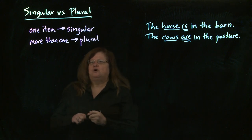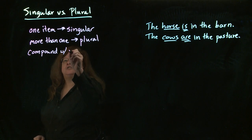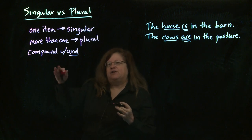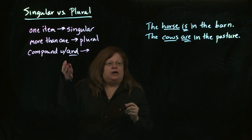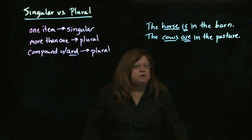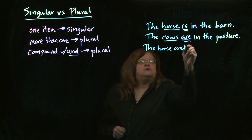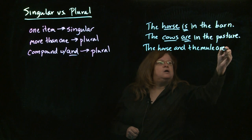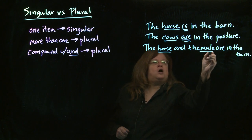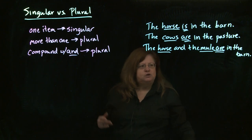Now we're going to get a little more complex when we look at compounds. If you have a compound that uses AND, AND means adding things together. So even if you're adding things together that are singular, when you're using AND, you automatically end up with something plural because you're adding things together and you get more than one. So I can have 'the horse and the mule are in the barn.'